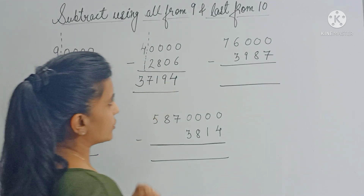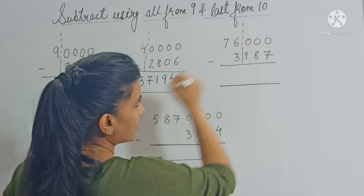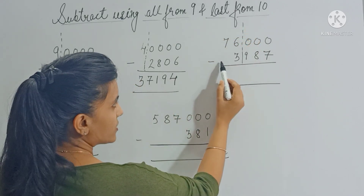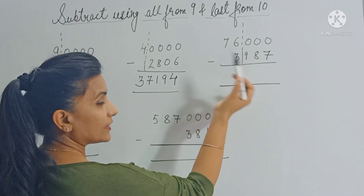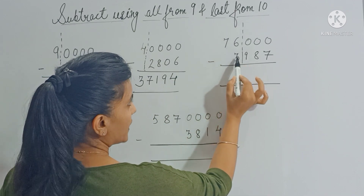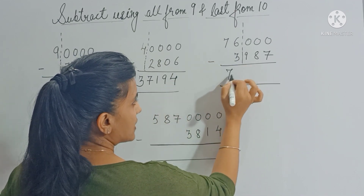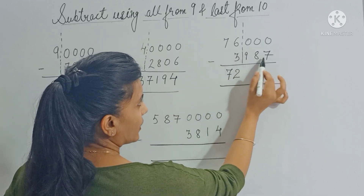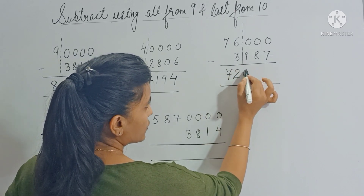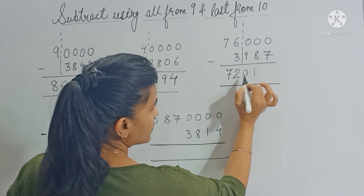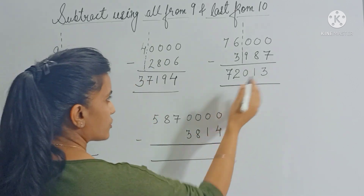In this question we have 3 zeros, so separate all the zeros. On the left side you have 76 and 3 — first subtract these two, then reduce by 1. So 76 minus 3 is 73, minus 1 gives you 72. On the right side apply 'all from 9, last from 10': 9 plus 0 gives 9, 8 plus 1 gives 9, and 7 plus 3 gives 10. So this is your answer.